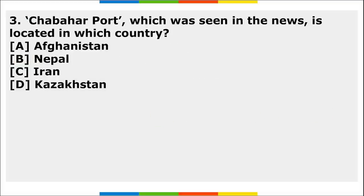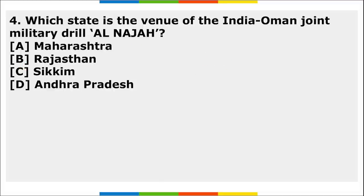Next MCQ: Chabahar Port, which was seen in the news, is located in which country? The answer is Iran. Chabahar Port is a strategic port located in Iran, in the commercial transit center of the Central Asian region. Recently, Chabahar Day was celebrated to mark the beginning of the International North-South Transport Corridor.